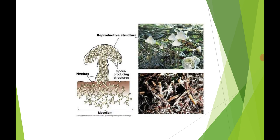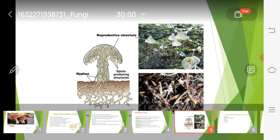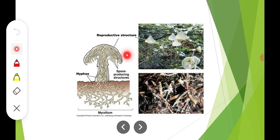This picture shows us the reproductive structure of fungi. In this picture, a hypha is shown — a single thread-like structure. When it forms branches, it is called mycelium. Mycelium is shown at the bottom of the picture, and the spore-producing structures are shown at the tip of the picture.